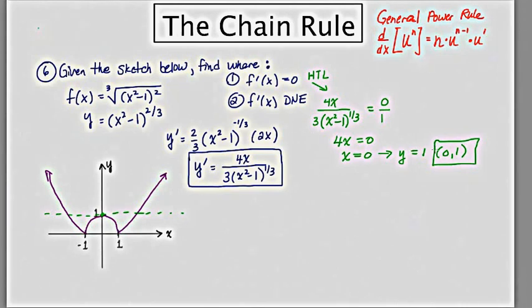The second part of the question asks, where is the derivative, where does it not exist? And we know derivatives don't exist at points where there is a vertical tangent line, a cusp, or a discontinuity.